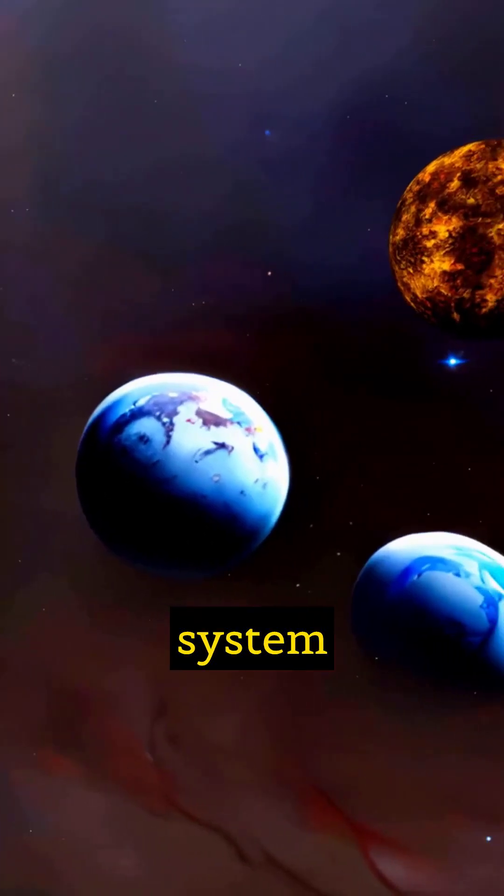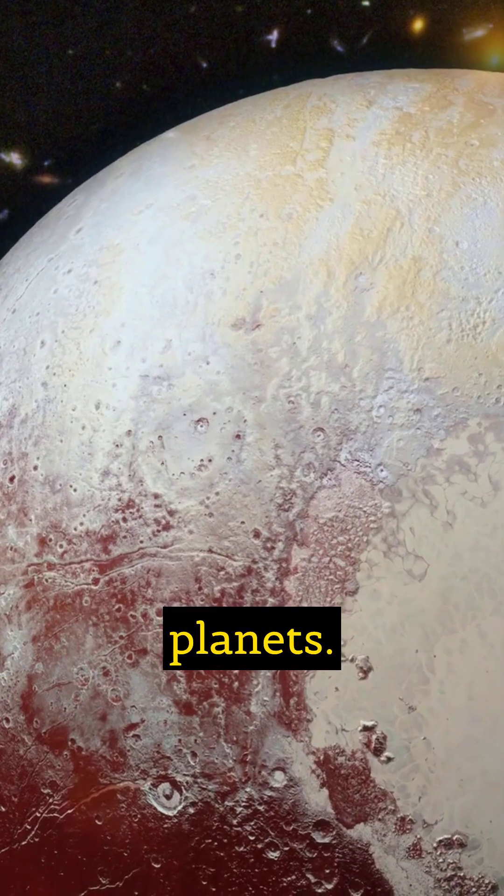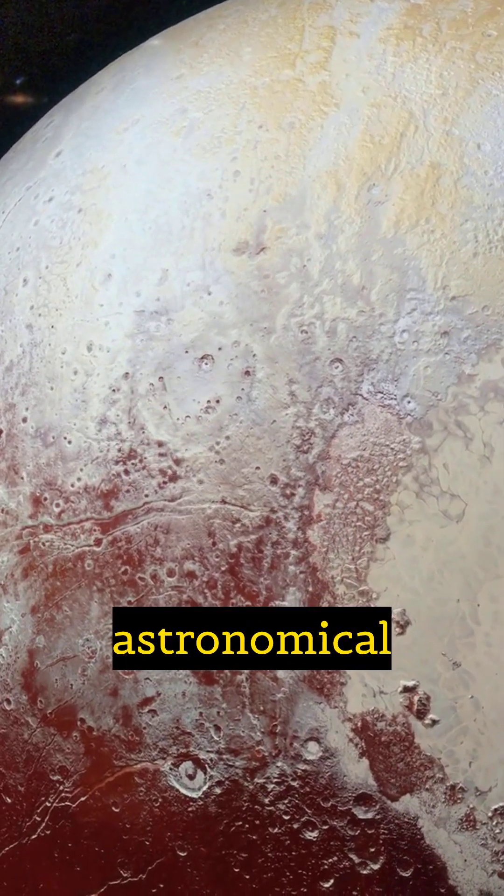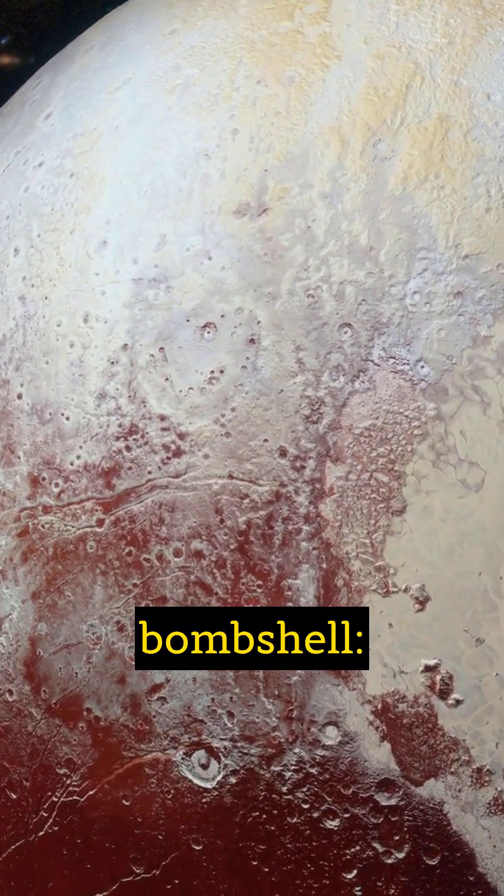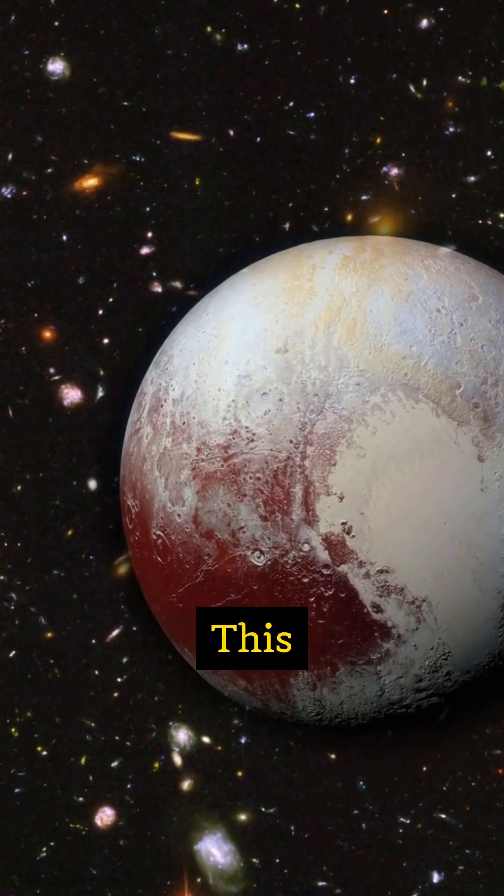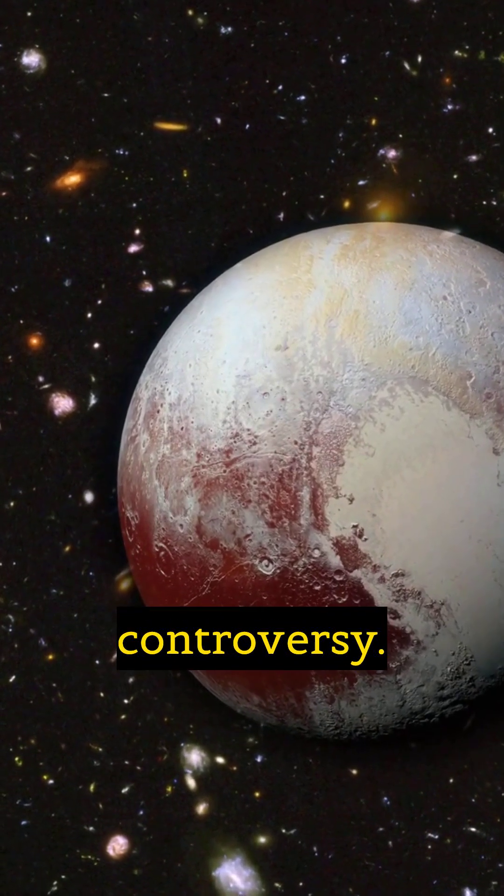For decades, our solar system proudly boasted nine planets. Then, in 2006, the astronomical community dropped a bombshell. Pluto was no longer considered a planet. This decision sparked a cosmic controversy.